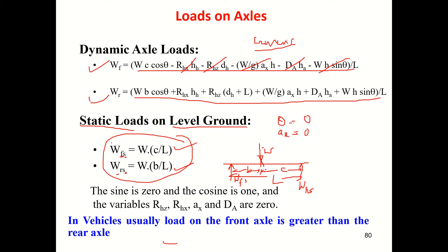So the load on the front and rear axles varies depending on the values of c and b — that is, where the center of gravity is located. We have front engine rear wheel drive configurations, and others.